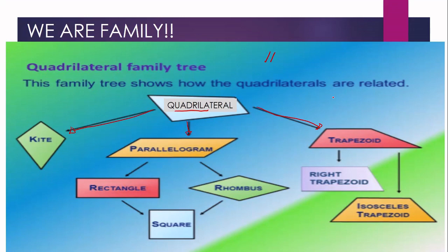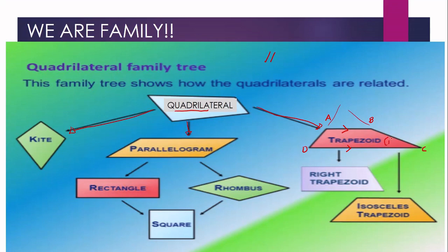The first one is the trapezoid. If we name the vertices as trapezoid ABCD, which sides are parallel? Segment AB is parallel to segment DC — that is one pair of parallel sides. Sides AD and BC are non-parallel because if we extend them, they will intersect. So a trapezoid is a quadrilateral with exactly one pair of parallel sides.